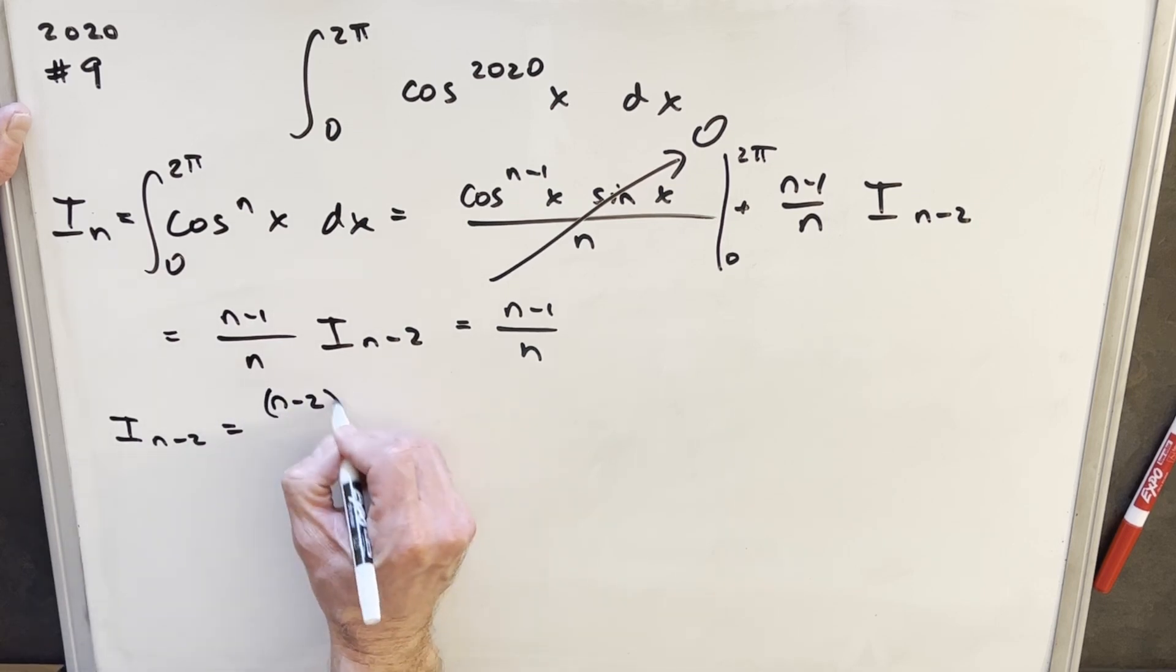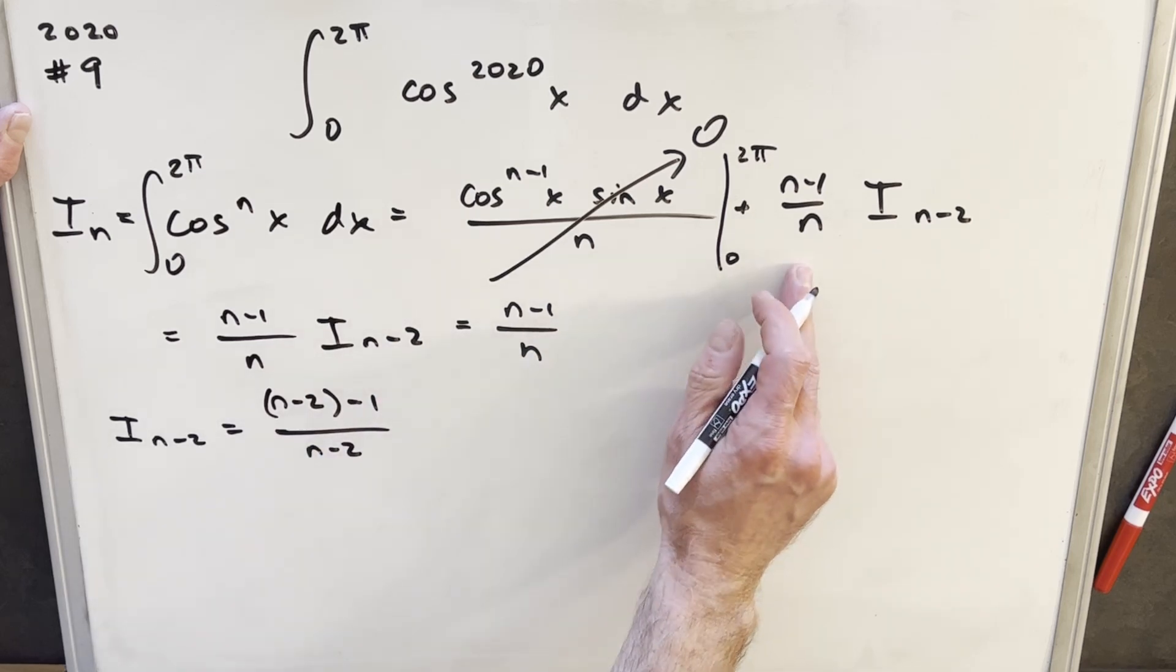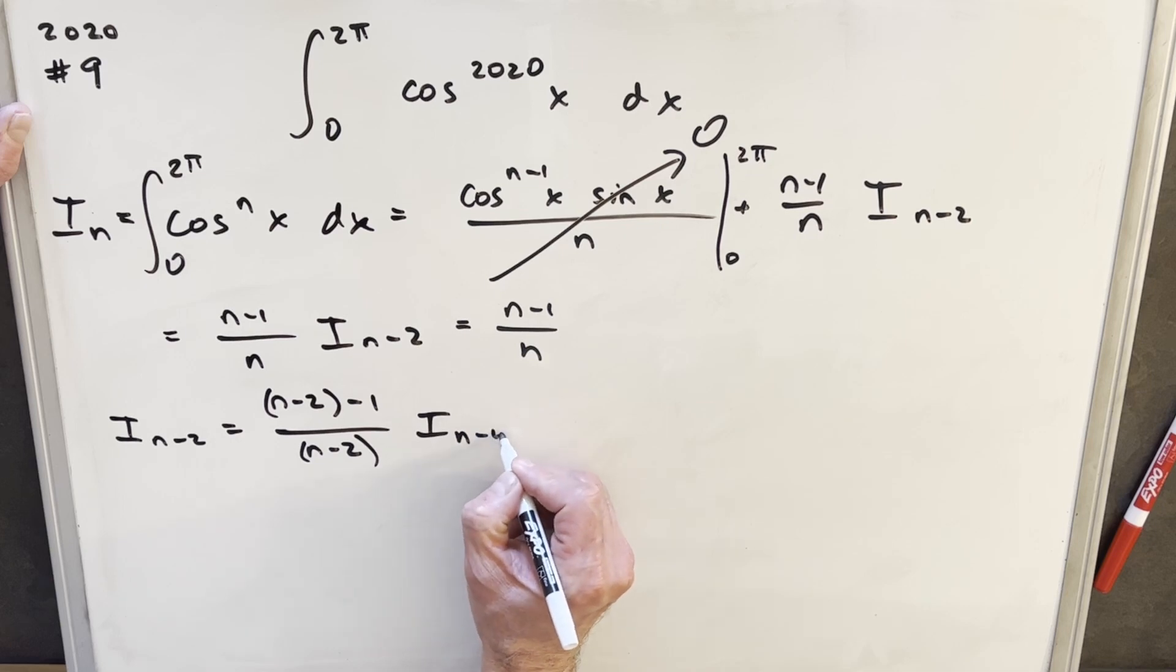Well, if we put n minus 2 over here, minus 1 over n minus 2, just kind of using this format, pattern matching, here we'll have i n minus 4.